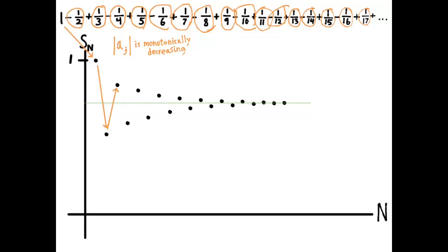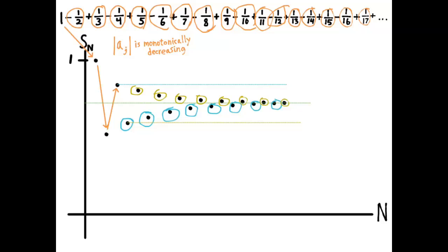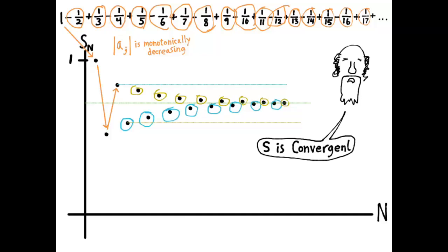And they do. To show it, consider the subsequence s₄, s₆, s₈, s₁₀, and so on — that's a monotonically increasing sequence bounded above by the value of s₃. At the same time, the sequence s₅, s₇, s₉, s₁₁, and so on is bounded below by the value of s₄. An increasing sequence bounded above must be convergent, and a decreasing sequence bounded below must be convergent. These both have to converge to the same value because the difference between successive partial sums is the value of aₙ, and that goes to zero. Therefore, that proves the alternating harmonic series must be a convergent series.